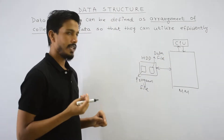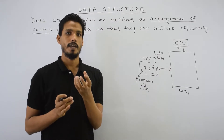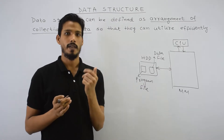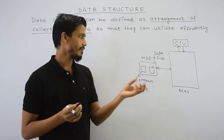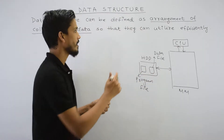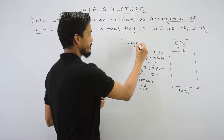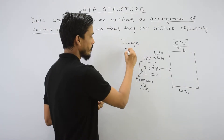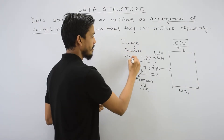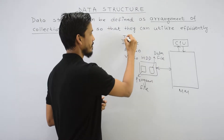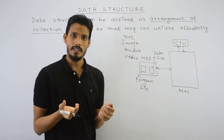What is a data file? For example, you can have a video file. Data formats include image files, audio files, video files, and text files. These are all examples of data files stored on your system.